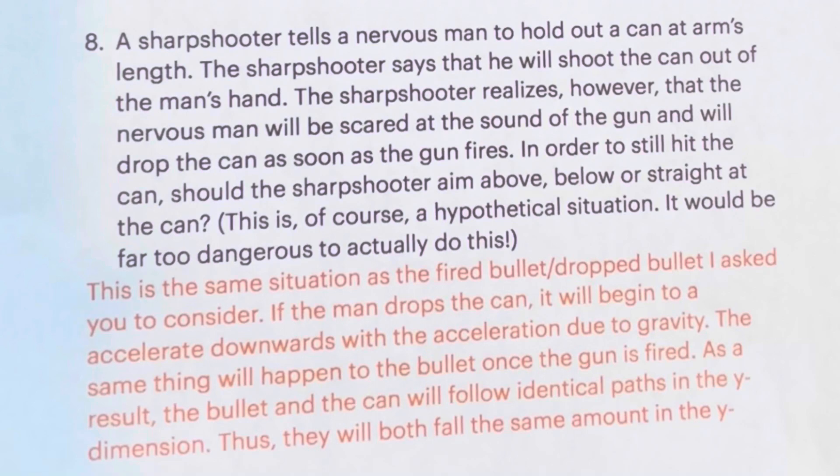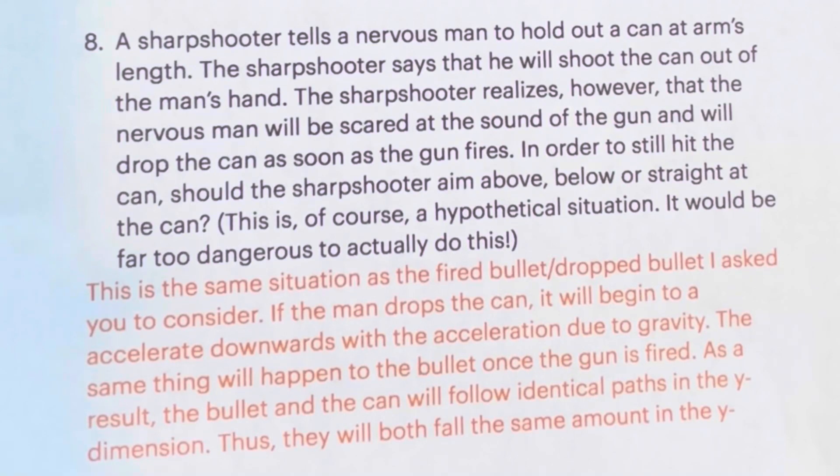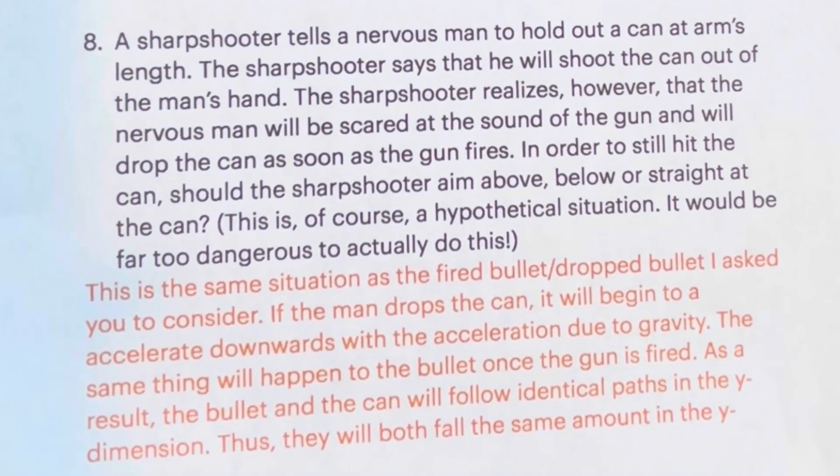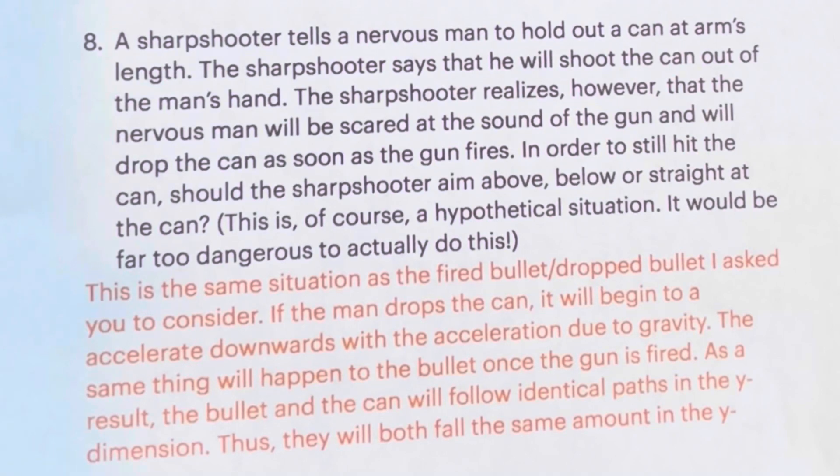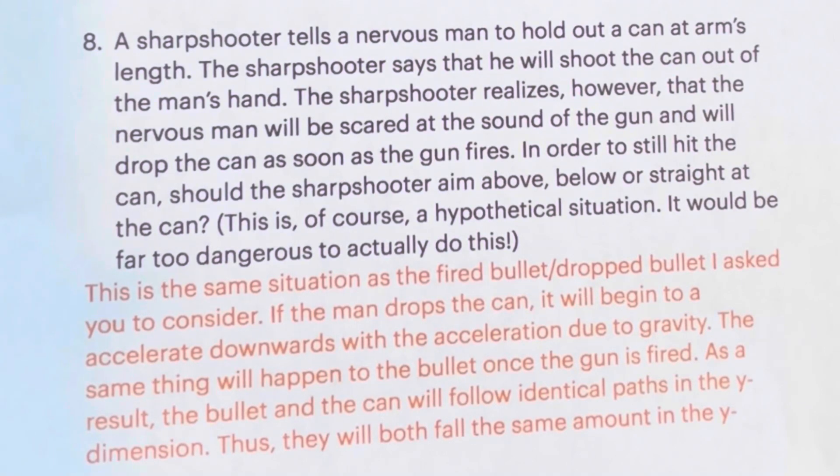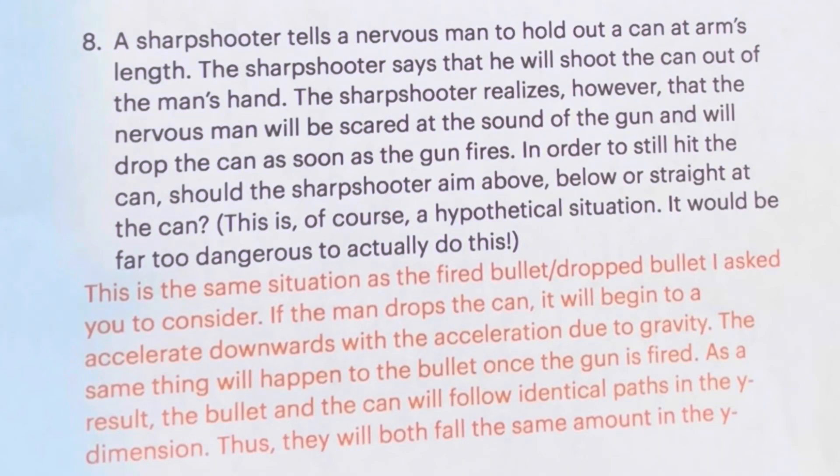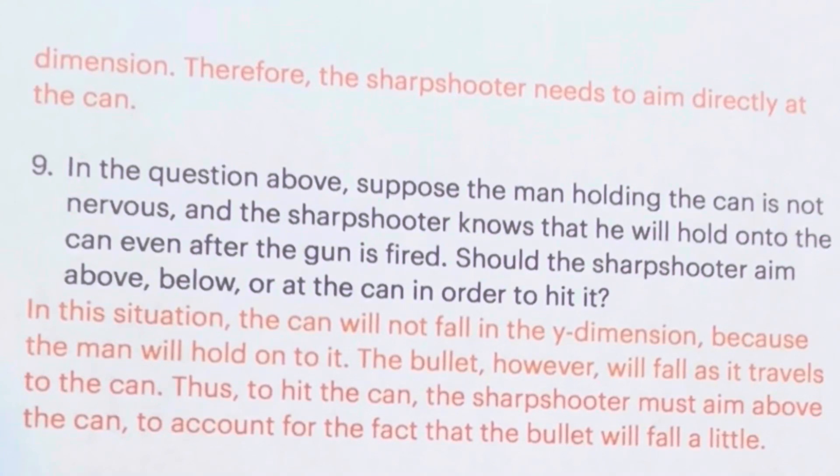If the man drops the can, it will begin to accelerate downwards with the acceleration due to gravity. The same thing is going to happen to the bullet once the gun is fired. As a result, the bullet and the can will follow identical paths in the Y dimension. Thus, they will both fall the same amount in the Y dimension. Therefore, the sharpshooter needs to aim directly at the can.